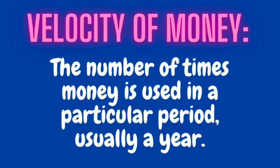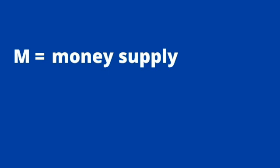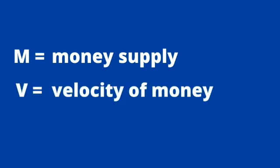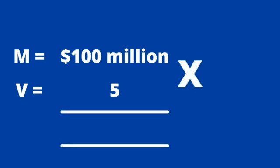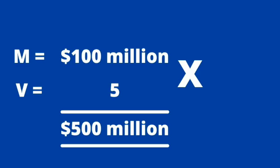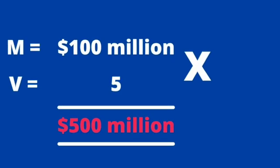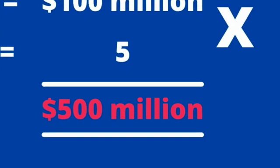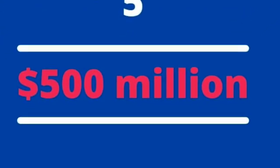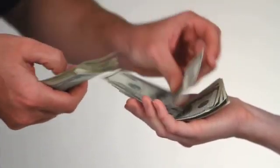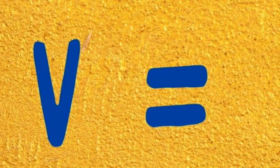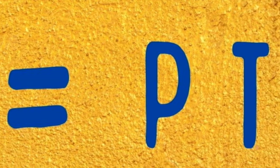Now let's put M and V together with an example. If M, the amount of money in the economy, is $100 million, and V is 5 — meaning each dollar changes hands five times a year — then the total amount of money flowing through the economy is $500 million. This means goods and services totaling $500 million were purchased in the year; total spending or expenditure in the economy was $500 million. This is the MV side of the equation: a top-down approach looking at economy-wide aggregate figures.